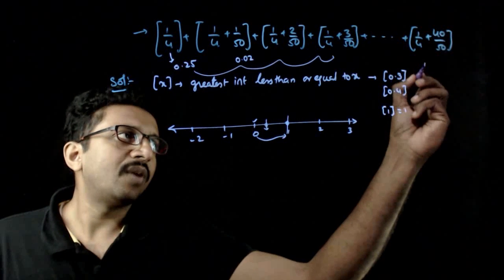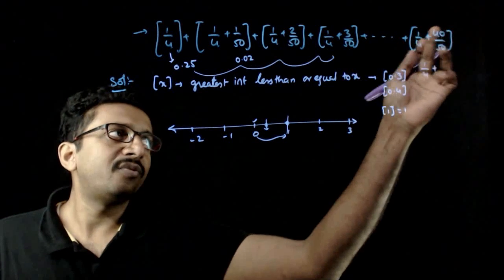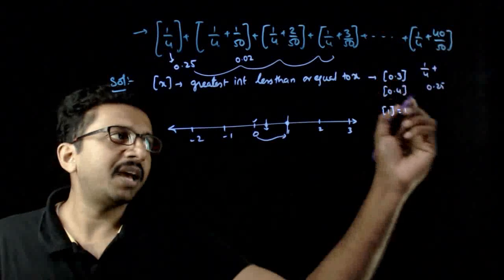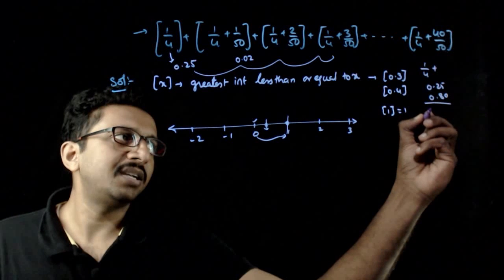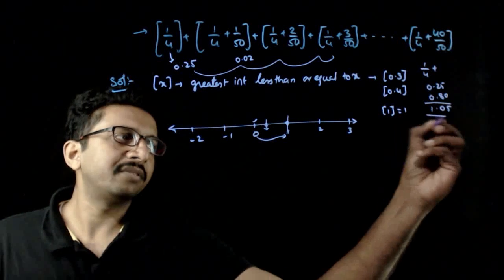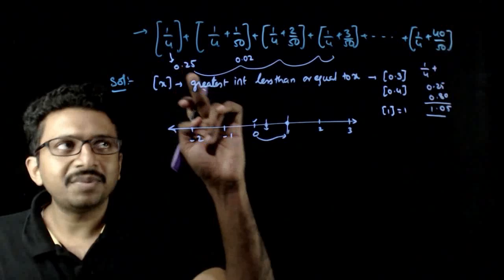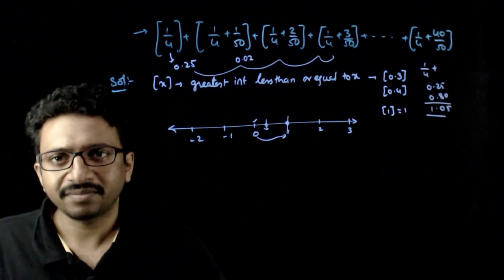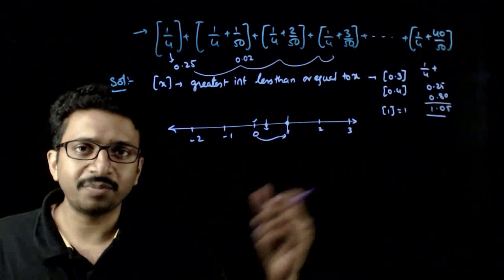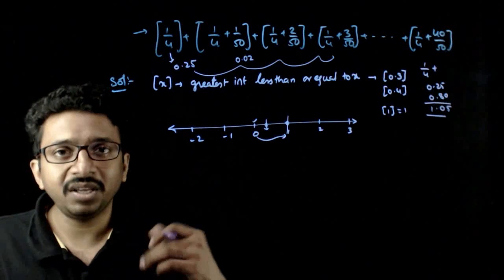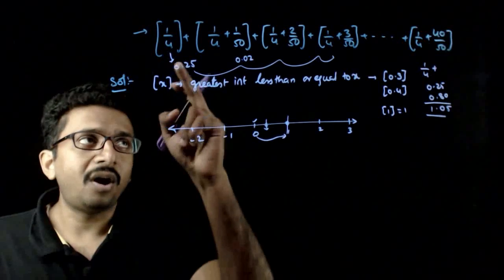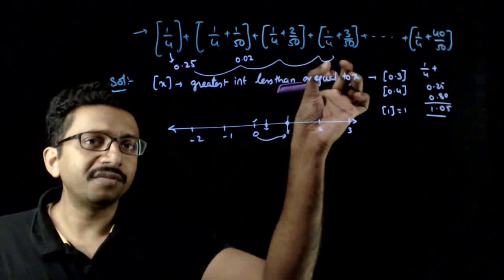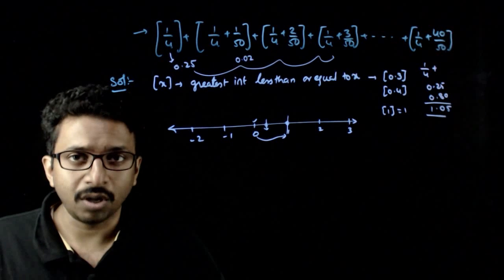Going to the last number: 1/4 plus 40/50 gives 0.25 plus 0.80, which is 1.05. So the number has slowly increased and crossed 1 at some point. The last integer part is therefore equal to 1, so not all integer parts are equal to 0 — some of these brackets are equal to 1 as well.